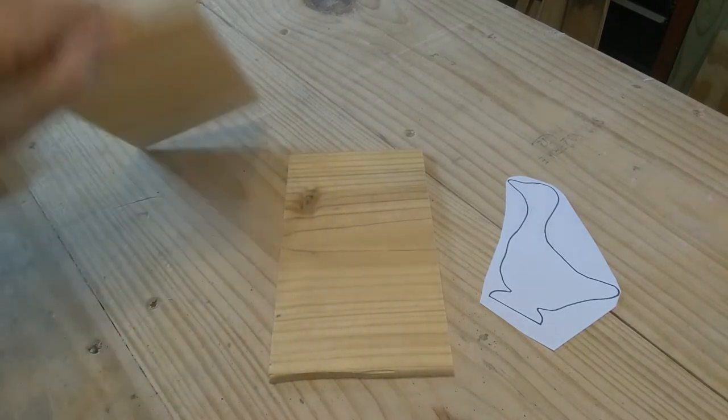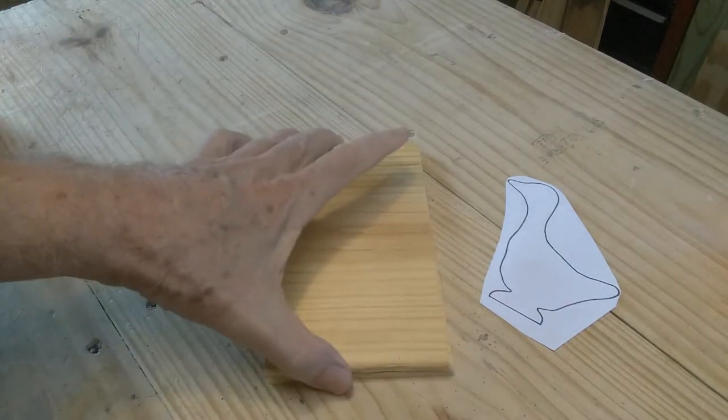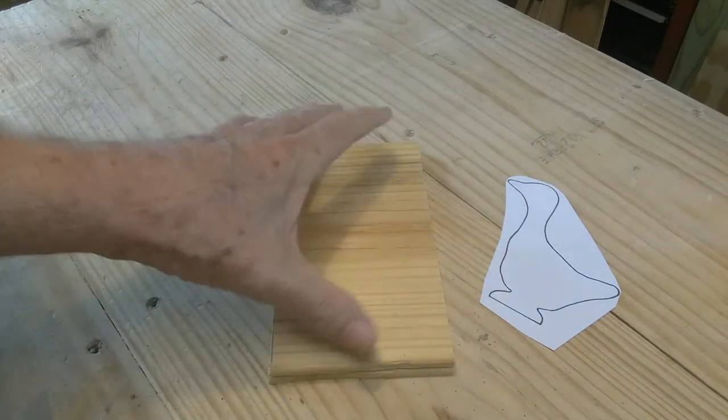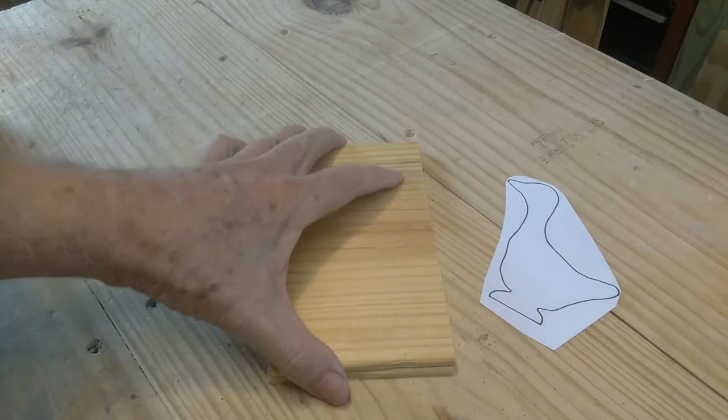So what I'm going to do is put these two pieces together, tape them where they'll stay as one piece, apply the pattern and then cut it.